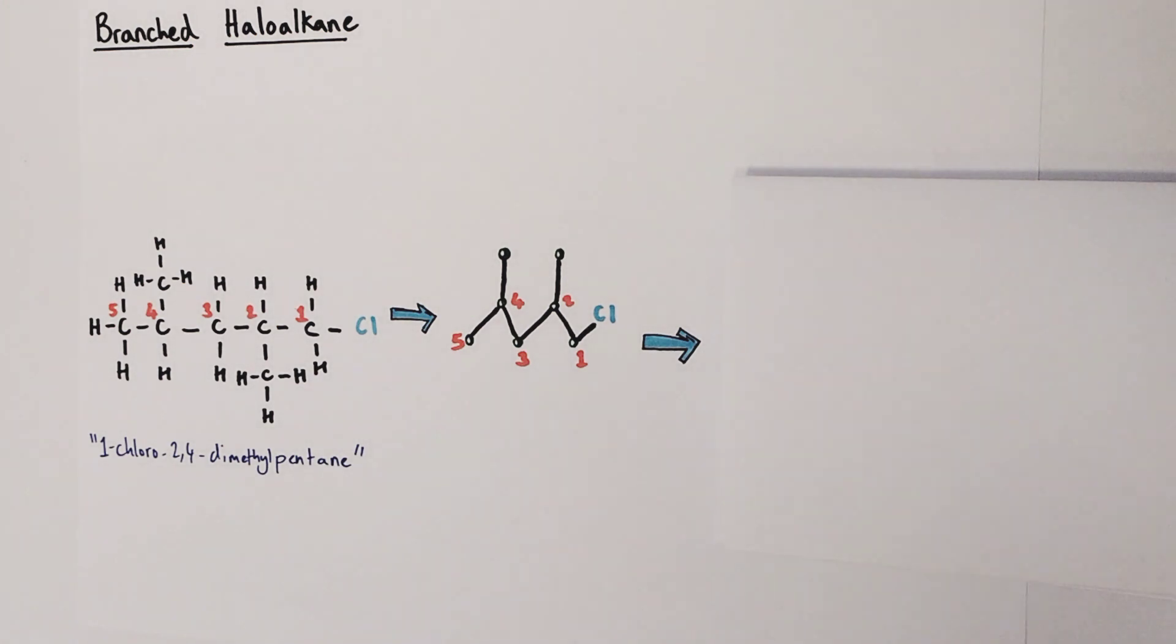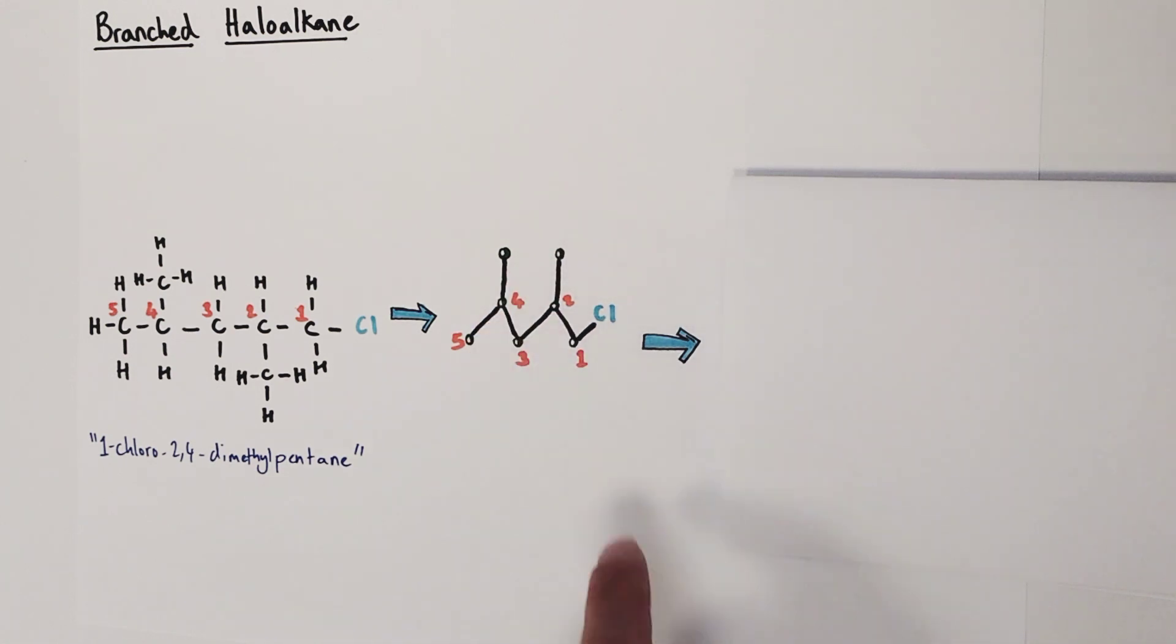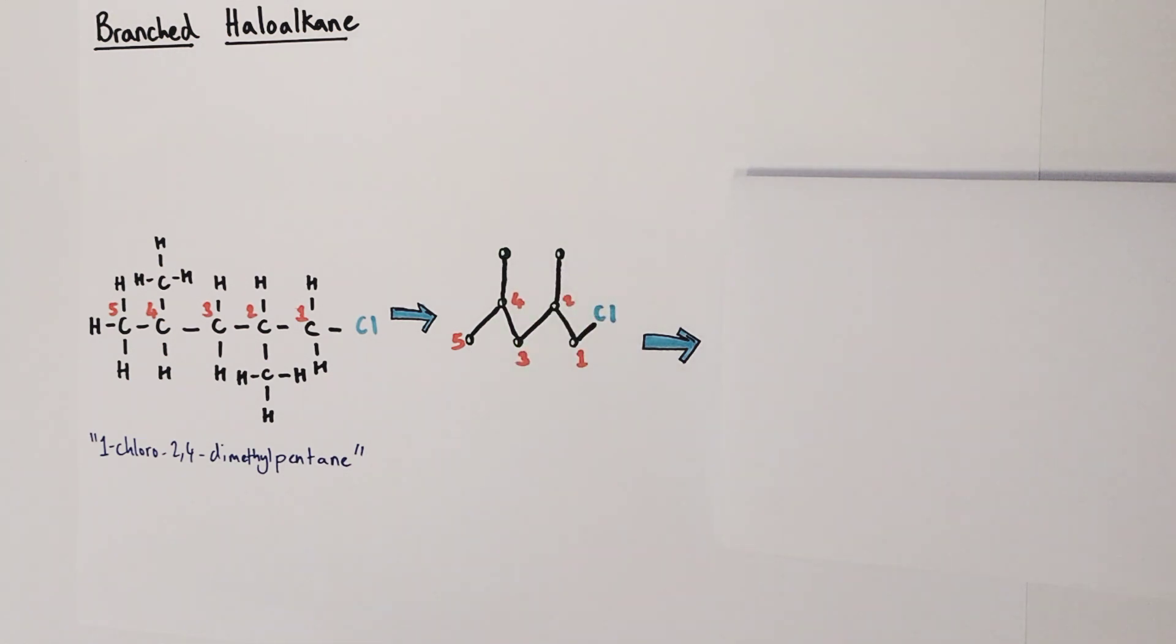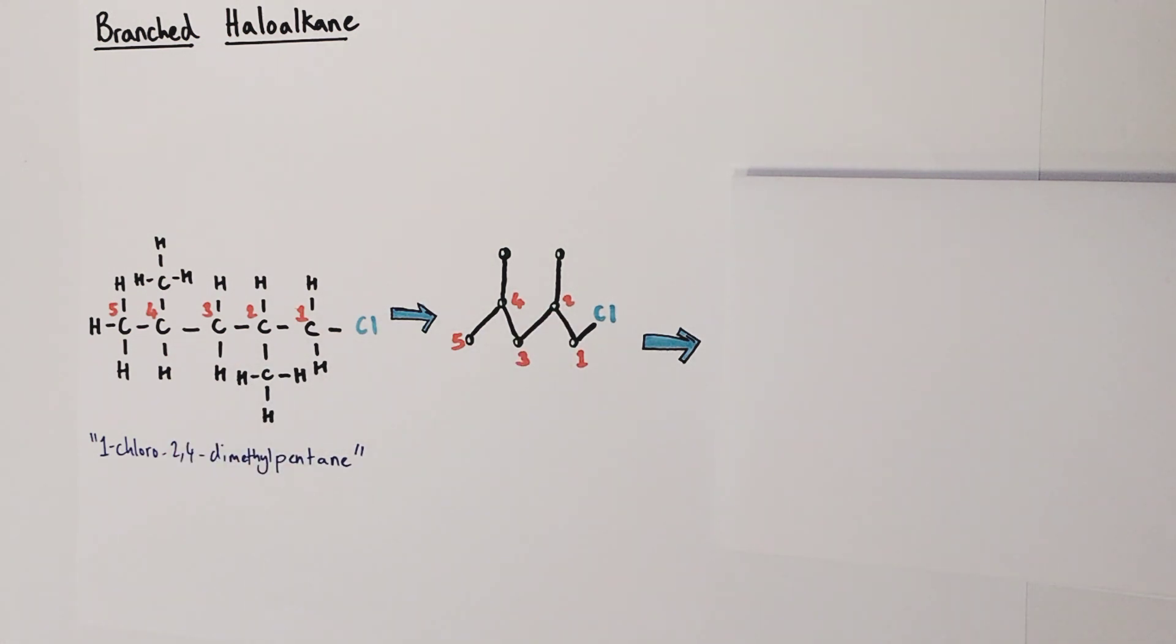So here is our skeletal structure with dots currently holding positions for where the carbons are. You can see we have one, two, three, four, five carbons in the linear chain, two CH3 groups coming off at the two and four position. I've not really been worried about whether that methyl group is going up or down because around single bonds, there's free rotation. So it doesn't really matter which side of the carbon I put the methyl group.